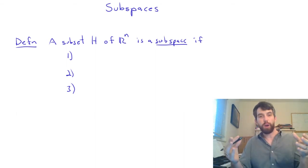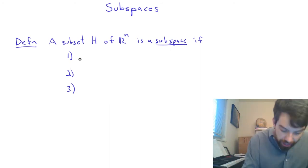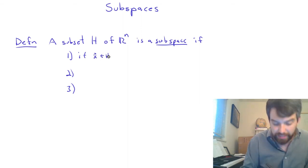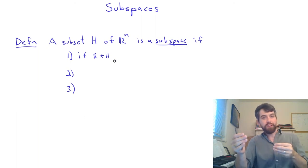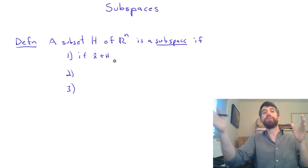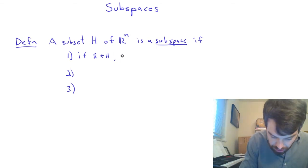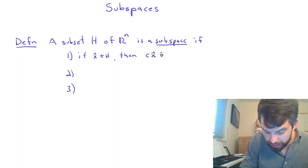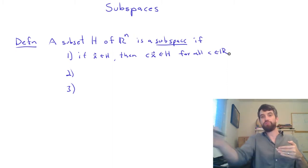So my first property is that it plays nicely with scalar multiplication. And here's what I mean by that. If I start with some vector and it's living inside of my subspace H, then suppose I take that vector and I stretch it out by a scalar, then that stretched vector is also in my subspace. So if x is in H, then it's going to be the case that the stretched vector cx is also inside of H, and that this is going to be true for all scalars c in the real numbers. So in other words, it plays nice with stretching.